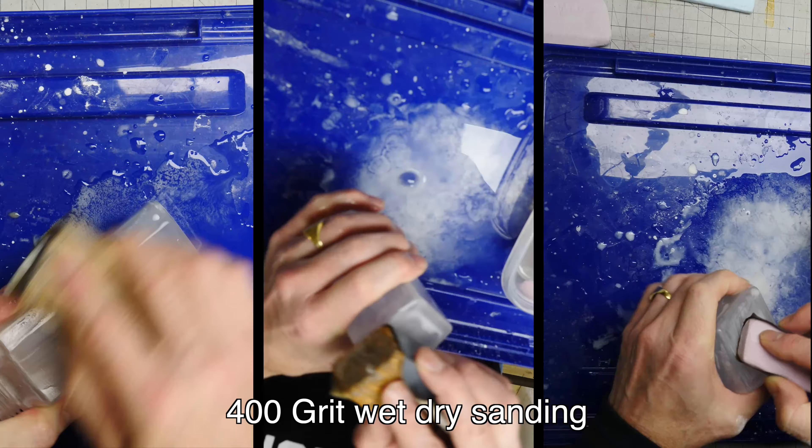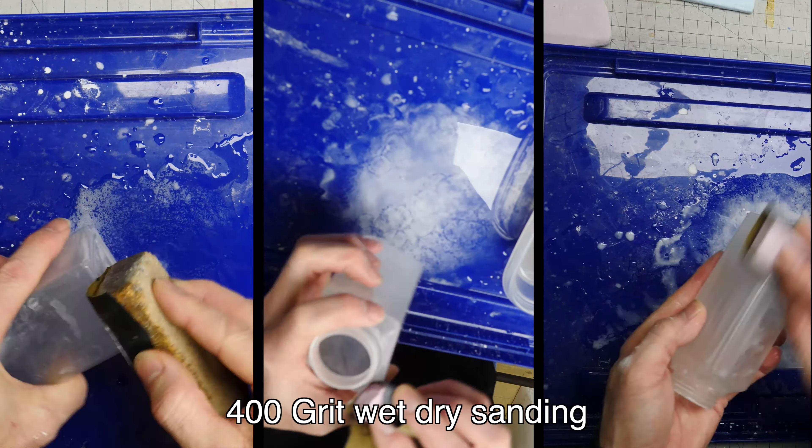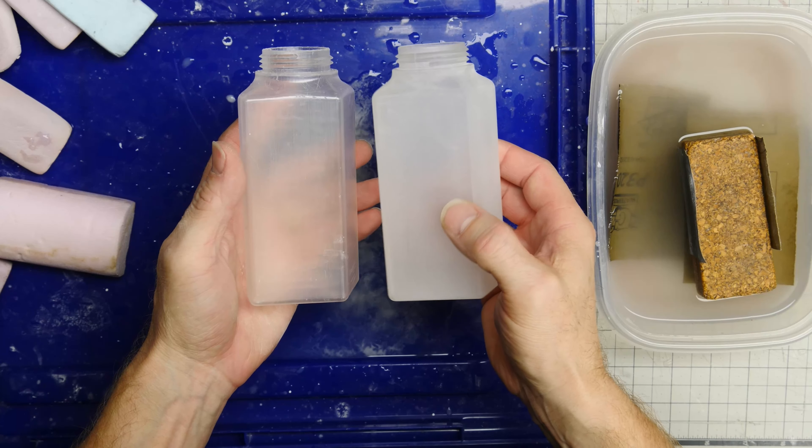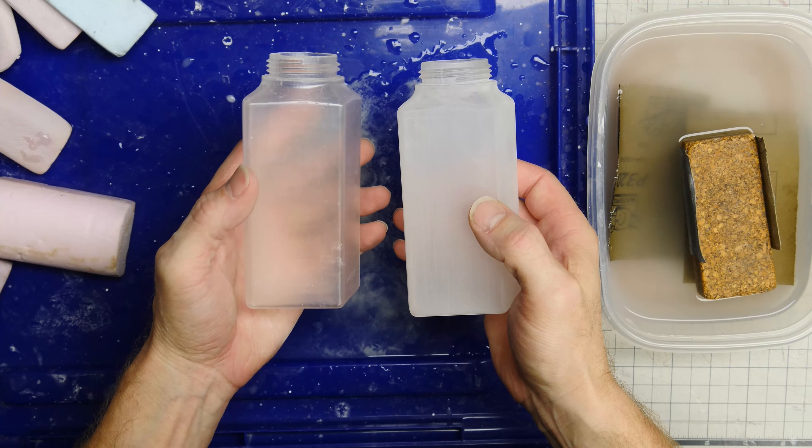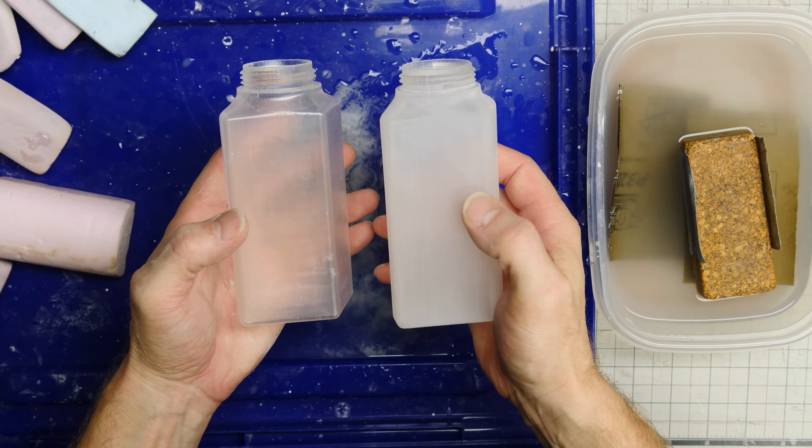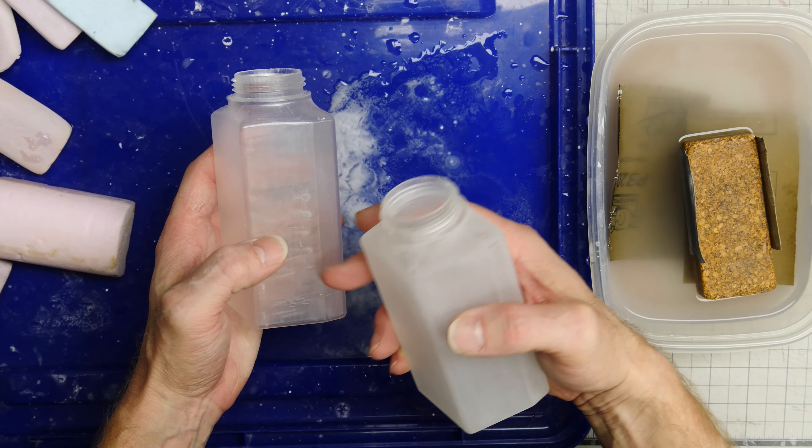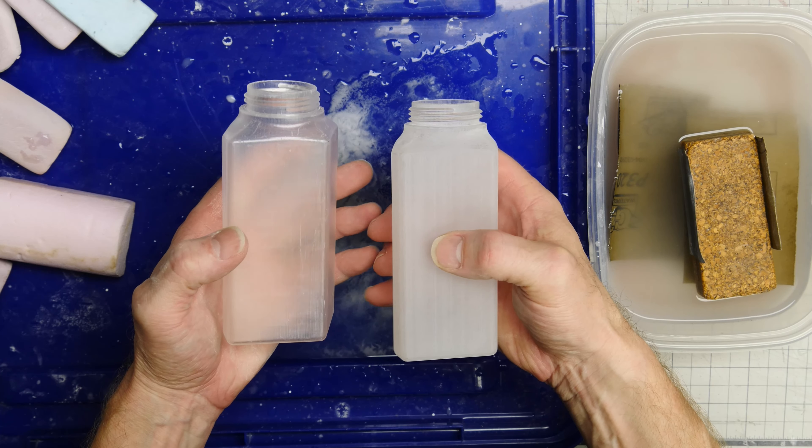Next, we'll switch over to 400 grit wet dry sanding. After 400 grit sanding, this is what the bottle looks like compared to when it started. You want it to have a nice matte finish so that you don't have any of the original print marks visible on the outside.